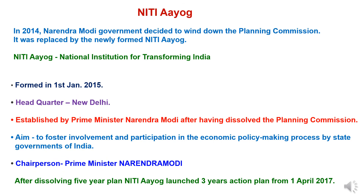After the dissolution of the Planning Commission, NITI Aayog was implemented in 2014. Narendra Modi's government decided to wind down the Planning Commission and replaced it with the newly formed NITI Aayog, which stands for National Institution for Transforming India. It was formed on 1st January 2015, with headquarters at New Delhi, and was established by Prime Minister Narendra Modi. NITI Aayog aims to foster involvement and participation in the economic policy-making process by state governments of India. The chairperson is Prime Minister Narendra Modi. After dissolving the Five-Year Plan, NITI Aayog launched a Three-Year Action Plan from April 1st, 2017.